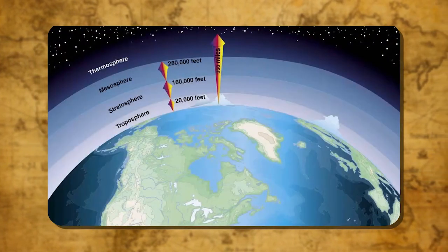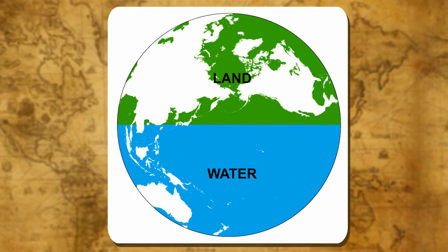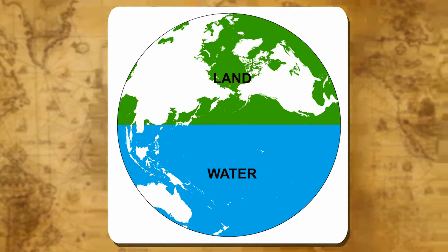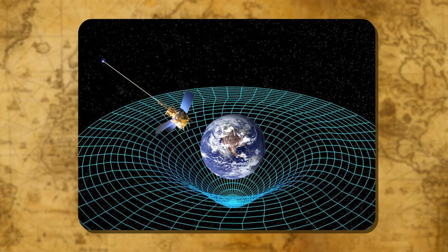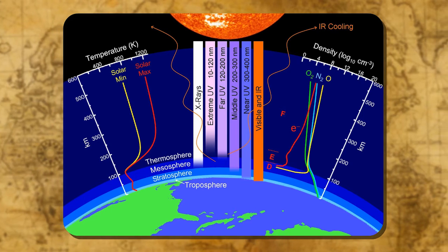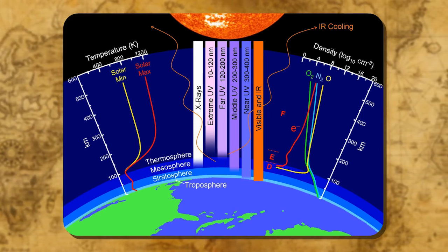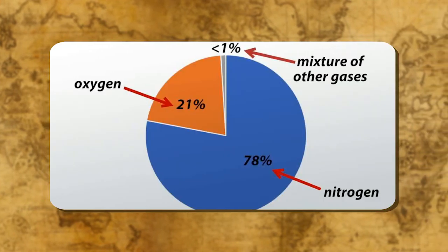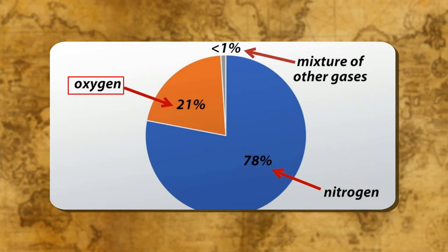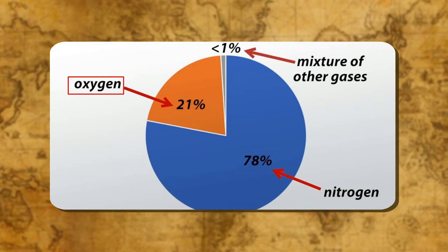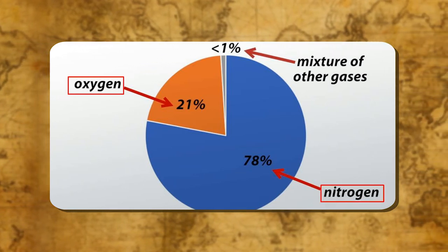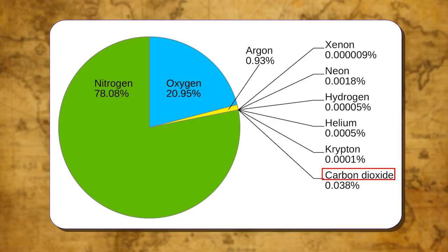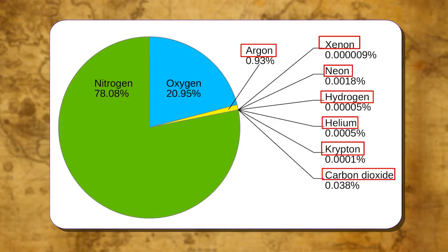The earth is surrounded by an envelope of air called the atmosphere. It is as much a part of the earth as land or water, although we may not feel it except when it moves as wind. It is held to the earth by gravitational attraction. This envelope is thickest at sea level and thins rapidly upwards. It provides us with the air we breathe and protects us from the harmful effects of the sun's rays. The atmosphere consists of a mixture of gases. About 21% of it consists of oxygen, which helps burning and breathing. The bulk of the atmosphere is made up of nitrogen, which constitutes 78% and it helps in the growth of living organisms. Carbon dioxide, argon, helium and other gases constitute 1% by volume.